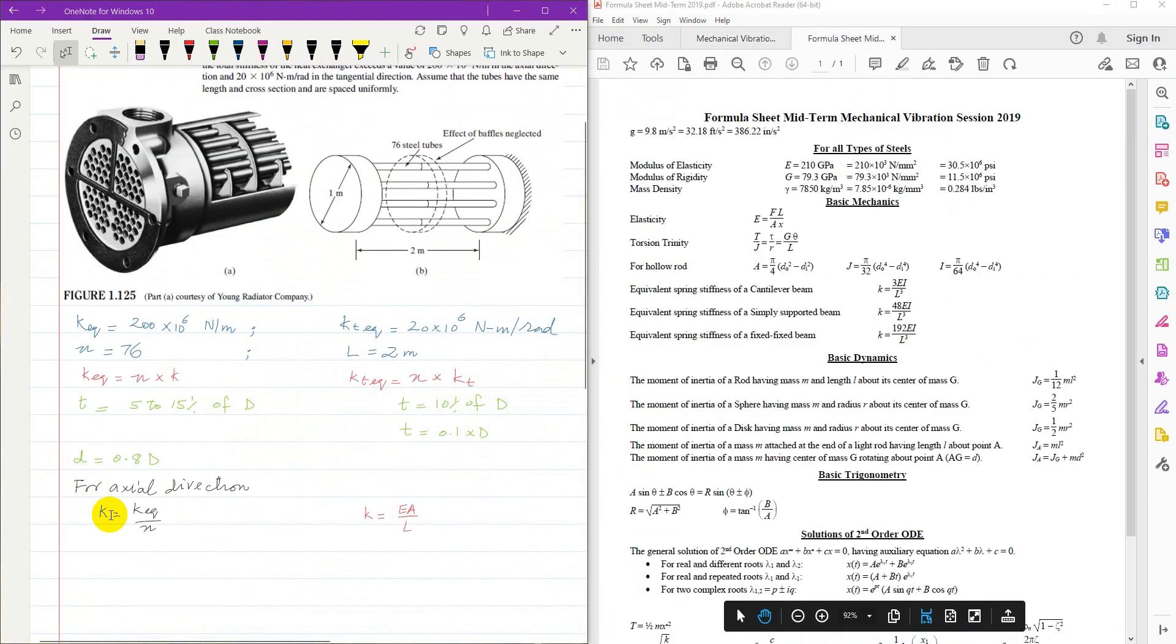So for axial direction, k is equal to k equivalent over n. So k equivalent is 200 into 10 to the power 6 over 76. And the formula from elasticity, f over x, k in axial direction is EA over L. For most steels, modulus of elasticity E is 210 gigapascal.